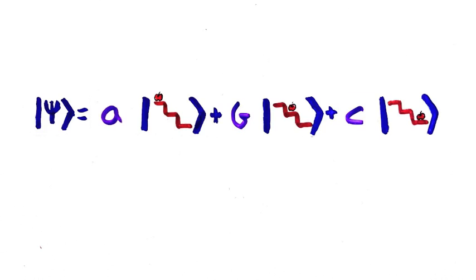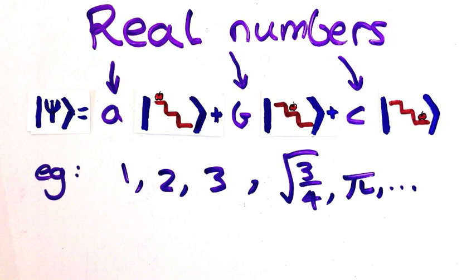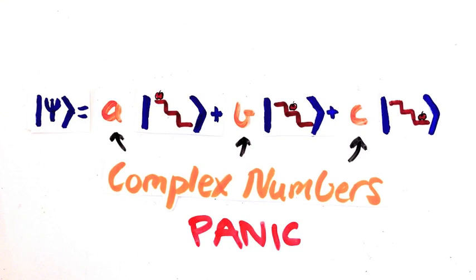Previously we looked at the case where these coefficients are real numbers, the kind of numbers we're all used to using. But actually in quantum mechanics we're allowed to use a more general type of number, called complex numbers.